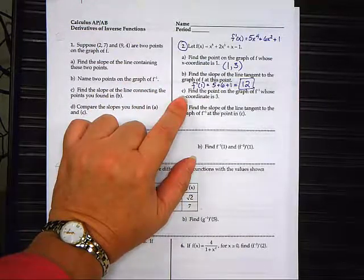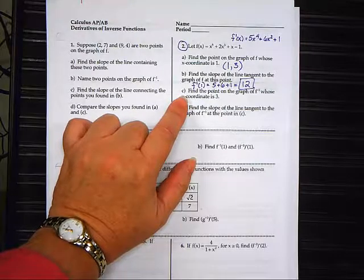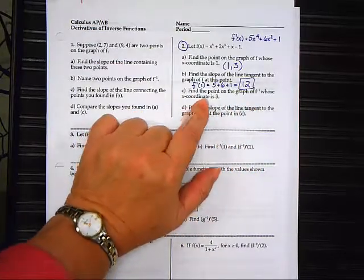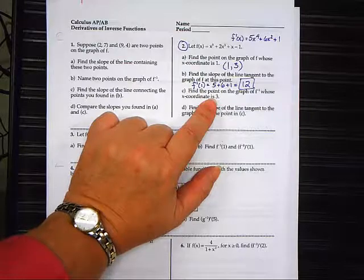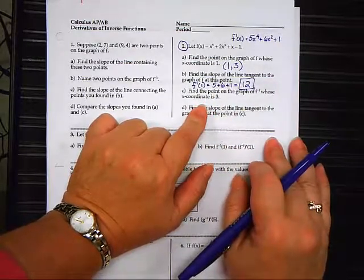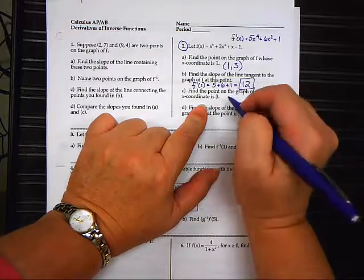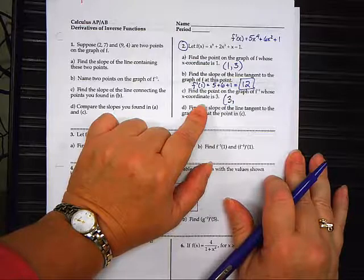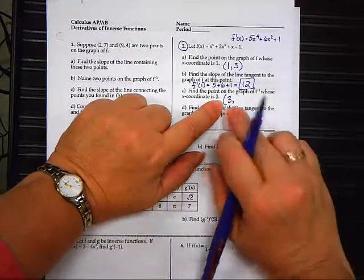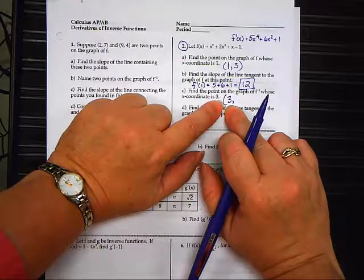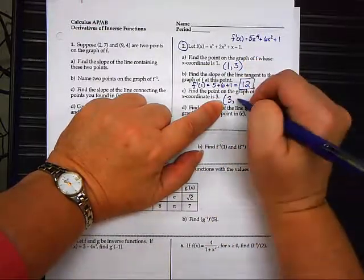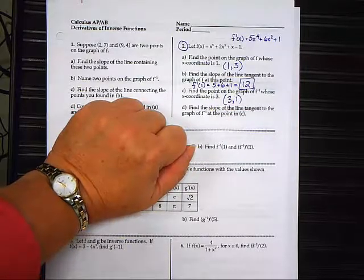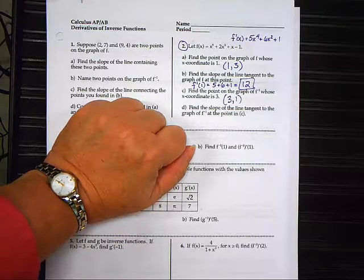I told you the math is easy. The math is not hard. Now letter c, the wording is a little bit strange. It says find the point on the graph of f inverse whose x coordinate is 3. Do you know the inverse equation? No. But it does tell me the x coordinate is supposed to be 3 on the inverse. So if y is 3 on the regular, so if x is 3 on the inverse, then y is 3 on the regular. So that just means the answer is 1.